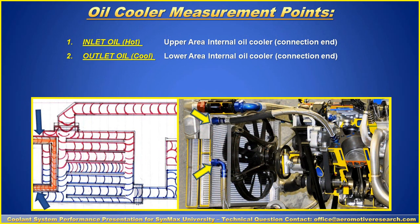On the water coolant system measurement points, we have the inlet on the upper part of the radiator, the outlet on the bottom coming out from the radiator, the thermostat housing, and the engine cylinder head and block. If you have an oil cooler inside the radiator, you've got the inlet and the outlet. If you have an oil radiator itself, you also have an inlet and an outlet. You have to make sure there's no blockage and everything is clean so you can have heat transfer efficiency.